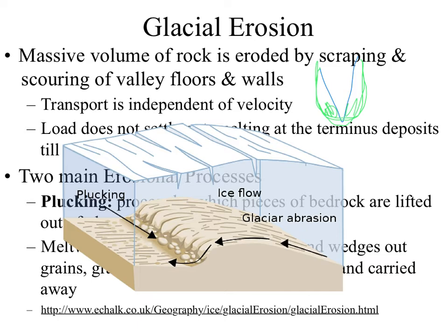The glacier does this by plucking — getting water into the cracks in the bedrock, and then that water freezes. Remember frost wedging? Same reason we have potholes on roadways. When this happens underneath the glacier, the material gets scooped up into the bottom of the glacier, frozen into the ice, and slides along. Now you get more plucking, more water, but you also have rocks in the bottom of the glacier scraping along the other bedrock. This is where we see glacial striations, as well as the plucking or pockmarking.